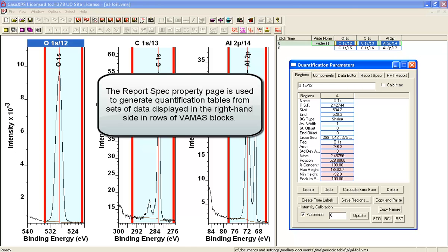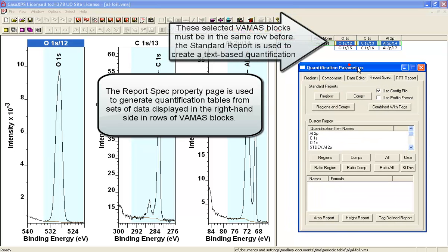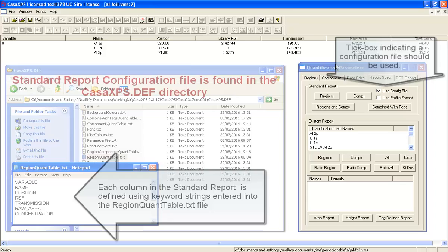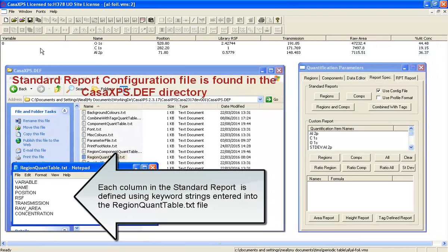Having simply created some regions, the first step might be to go to the report spec page and just select the regions standard report. We've used a configuration file that has output the experimental variable which is 0.